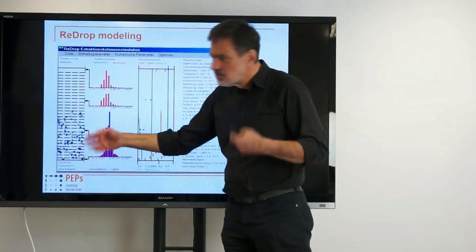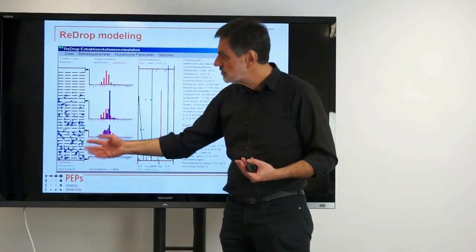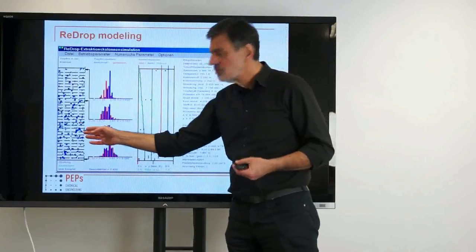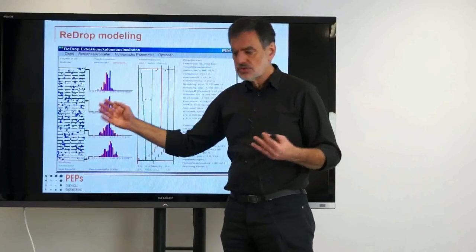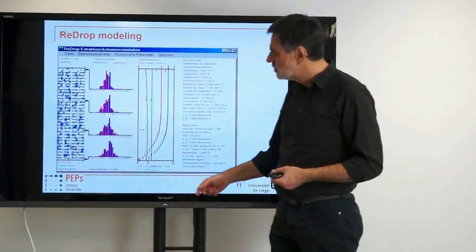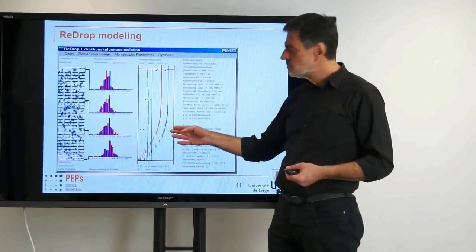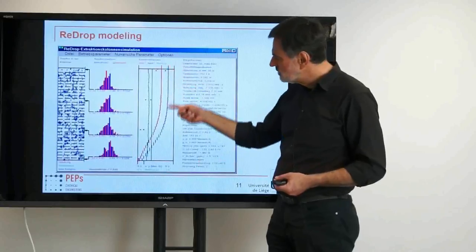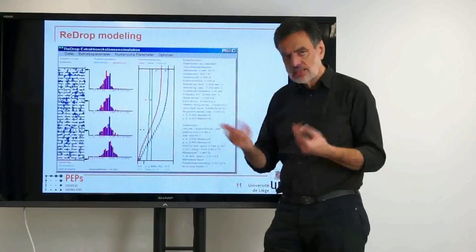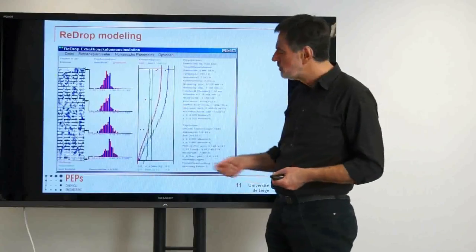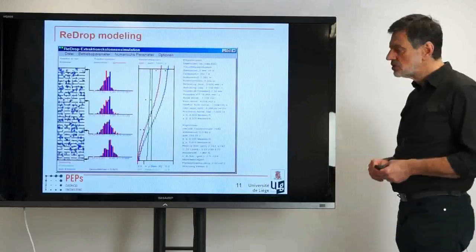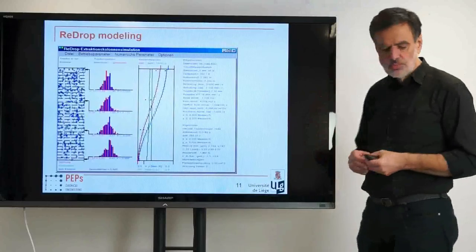You see here the column, and we are modeling also the starting conditions of the extraction column. It's a pulsed sieve tray column — we don't show the pulsation because it would be a little bit crazy on the screen. We get information on the drop size distribution and on the concentration profiles along the column height.